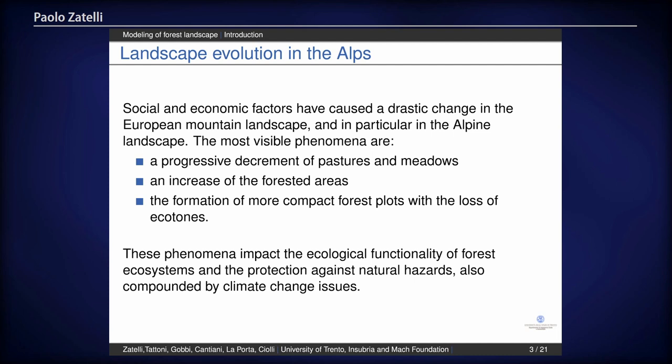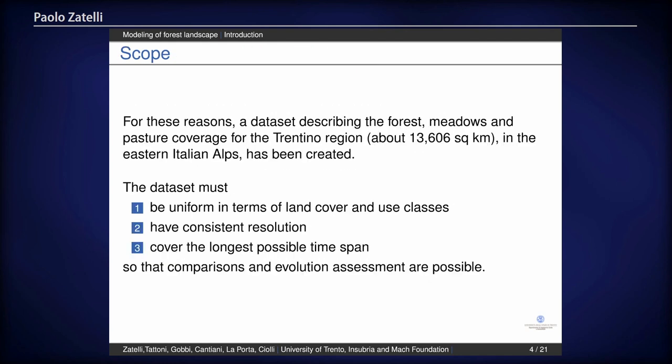We have also taken into account the fact that the climate is rapidly changing, so there is an additional driver to this change. What we have done is to build a cartographic database for a large region, which is the Trentino region — more than 13 square kilometers. We want to use this dataset to analyze the modification of the forest, and we need a series of maps which are uniform as land use and land coverage classes, which is not always the case.